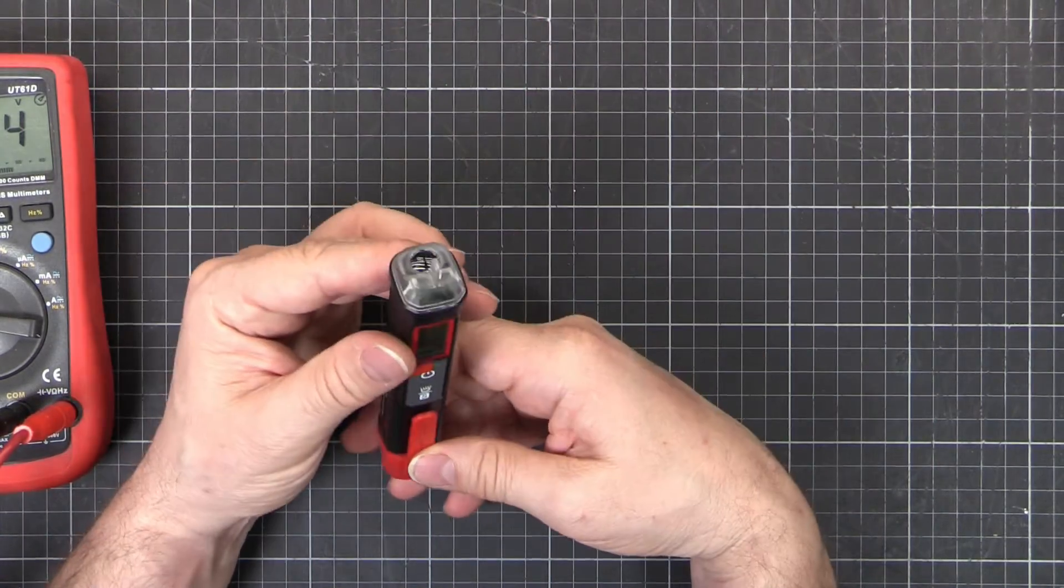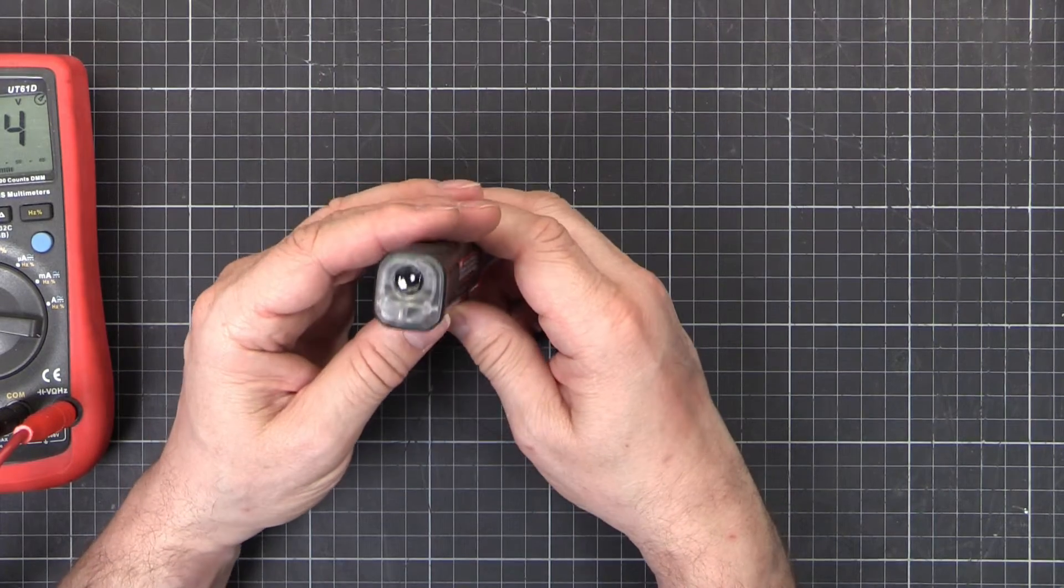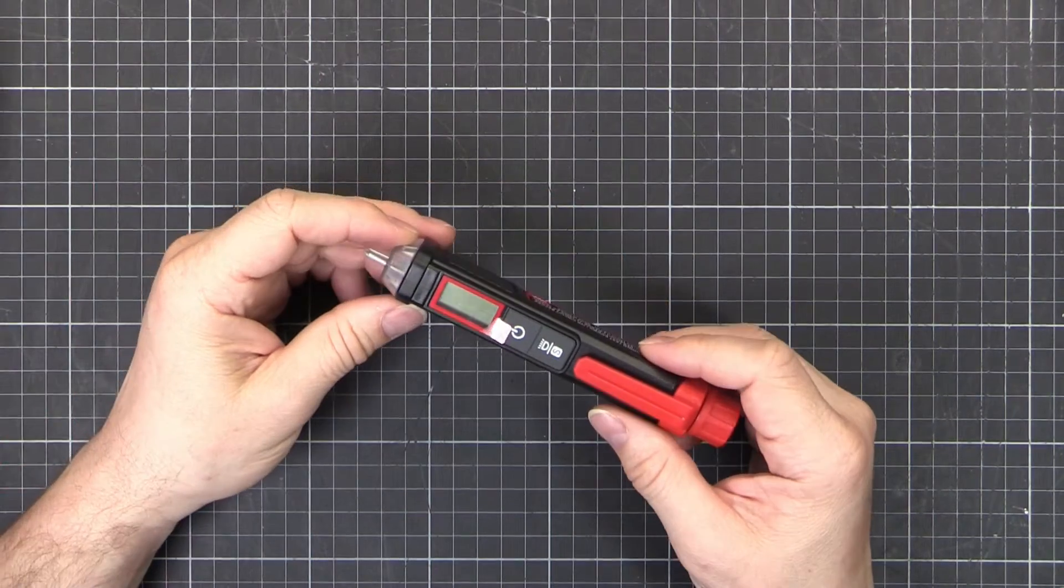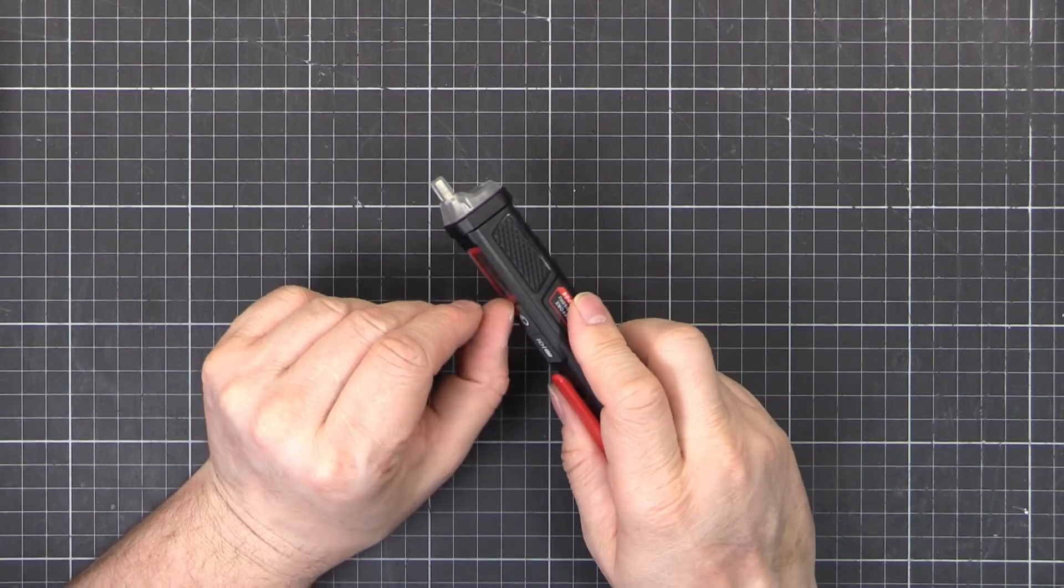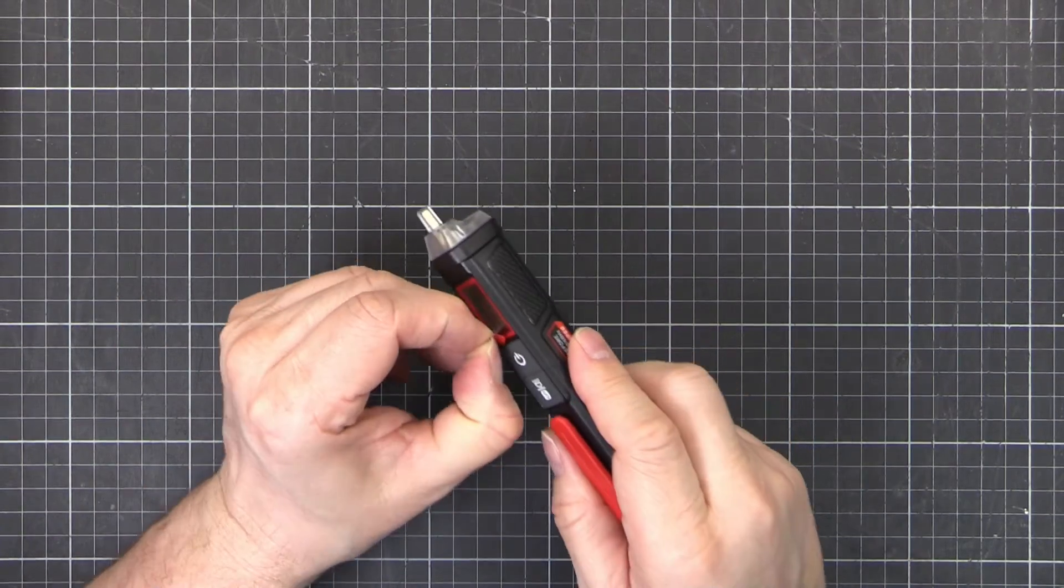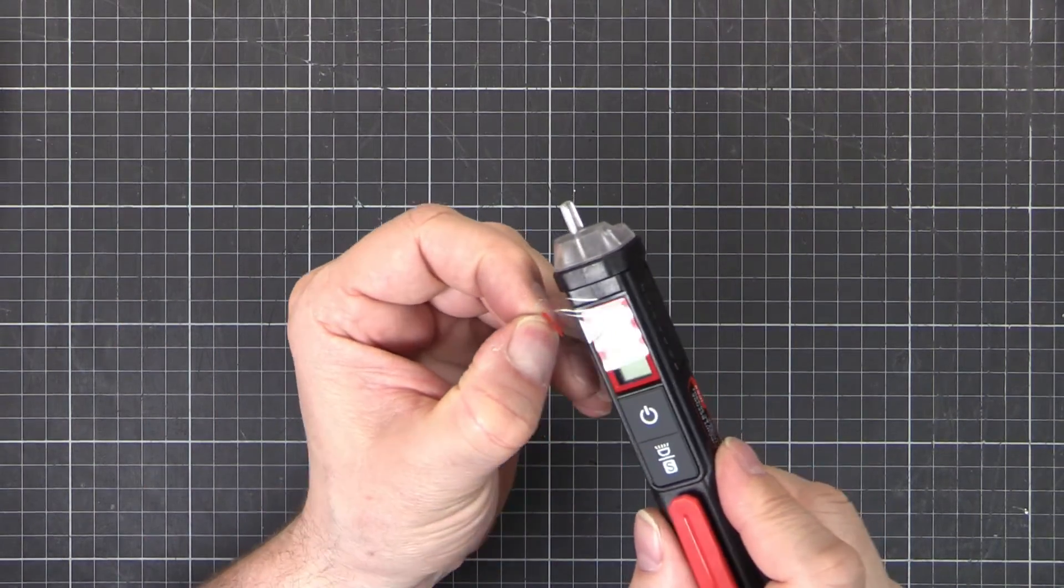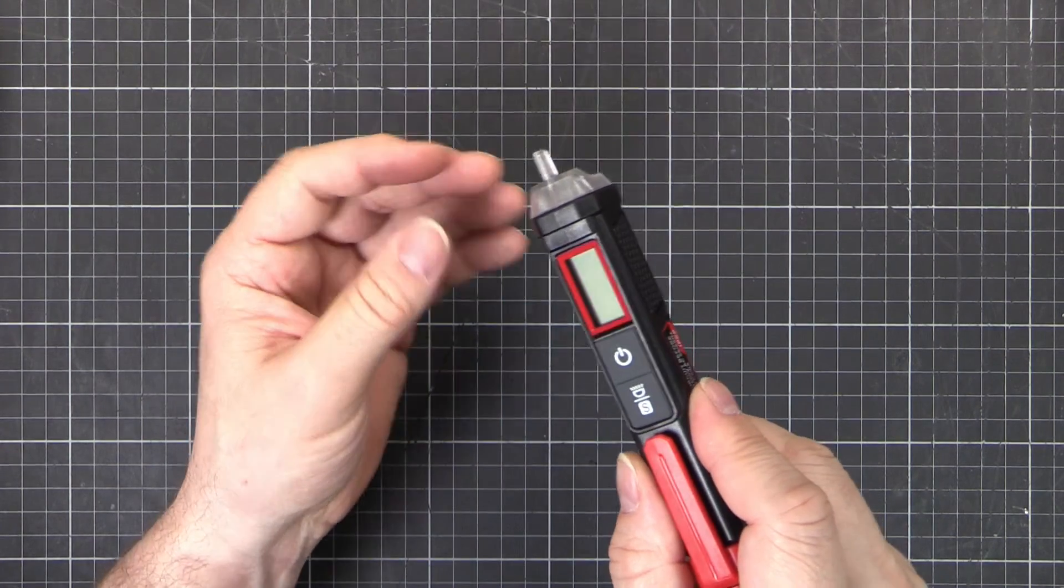And it's got a flashlight. Did I mention it's got a flashlight? And of course, before we go, there is the last thing to do. We've got to do the peel. Oh yeah, so shiny.